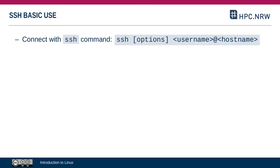The command for opening a connection is simply: ssh, then the options, then the username which you have on the remote computer, then an at-sign, and then the hostname — in other words, the name of the computer you are connecting to.